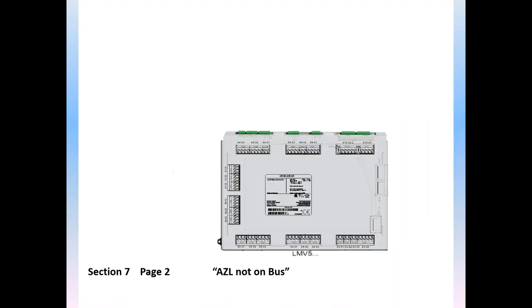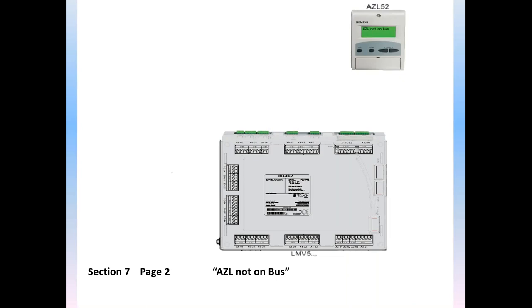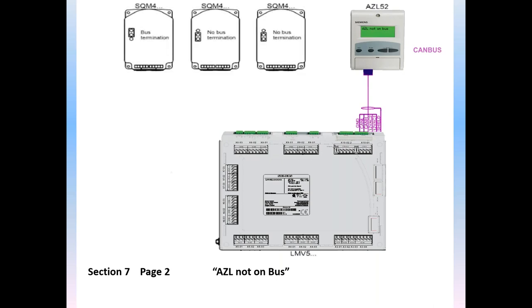Let's take another common fault: AZL not on bus. This is probably the strongest fault you can get on the LMV5 system. What it's telling you is that the CAN bus network is no longer communicating — it can't tell you what the fault is because there's no communication going on whatsoever. The LMV5 basic unit needs an AZL display for the human interface, connected by means of a CAN bus connection. To run the burner, we also need actuators for air, gas, and fuel — and those must also be daisy-chain connected by CAN bus connections. This is the CAN bus communication network, shown in purple, between the servos, the LMV, and the AZL display unit.